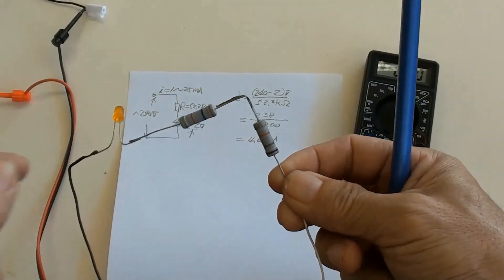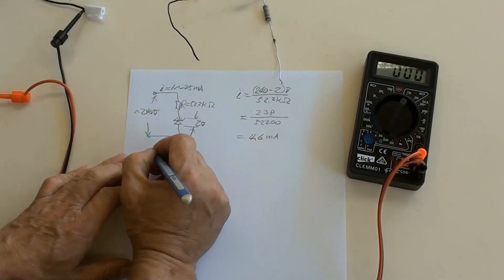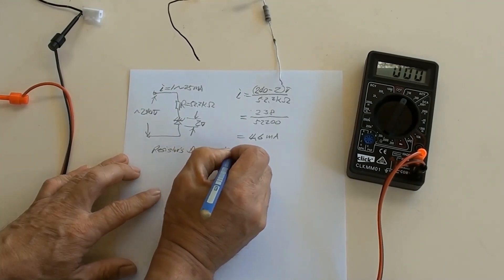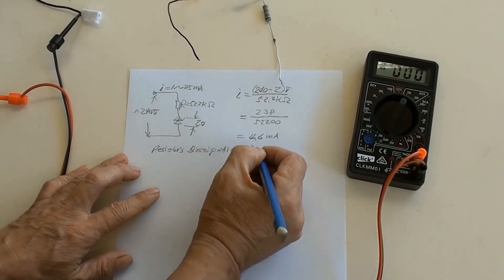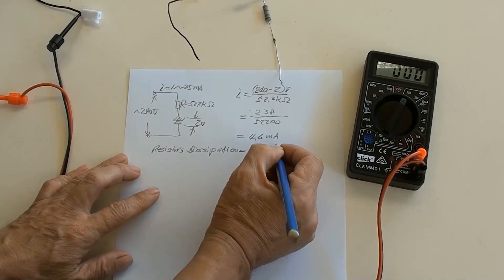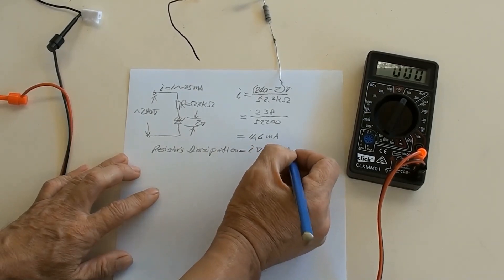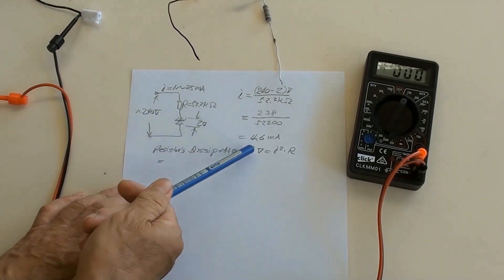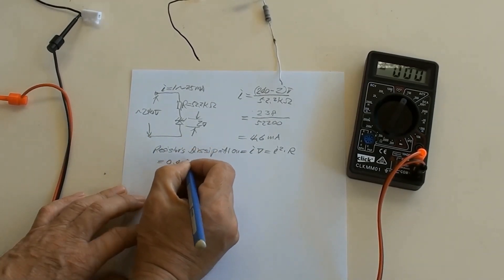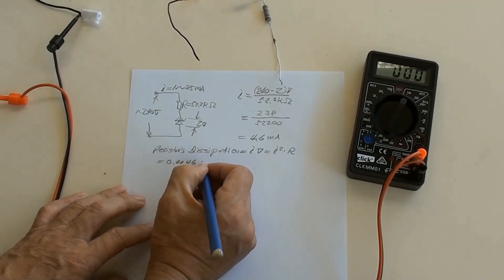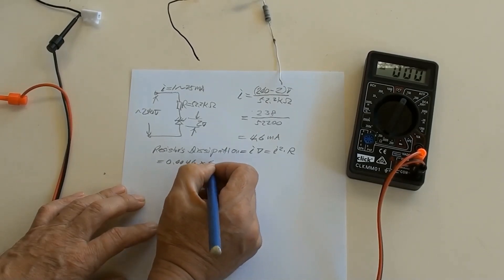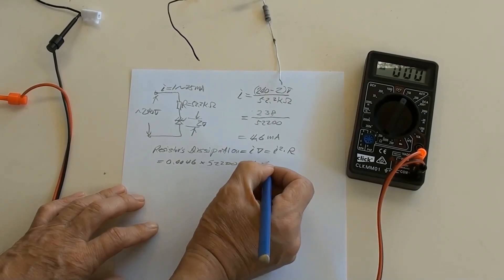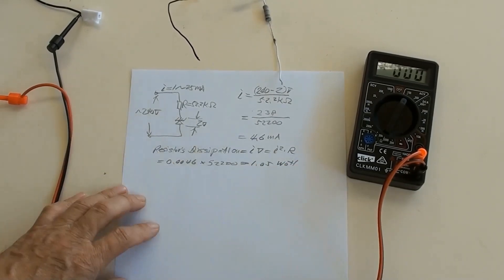Now calculating the resistor's dissipation: P = I × V = I² × R = (0.0046)² × 52200 = 1.05 watts. So we choose a 2-watt resistor for this circuit.